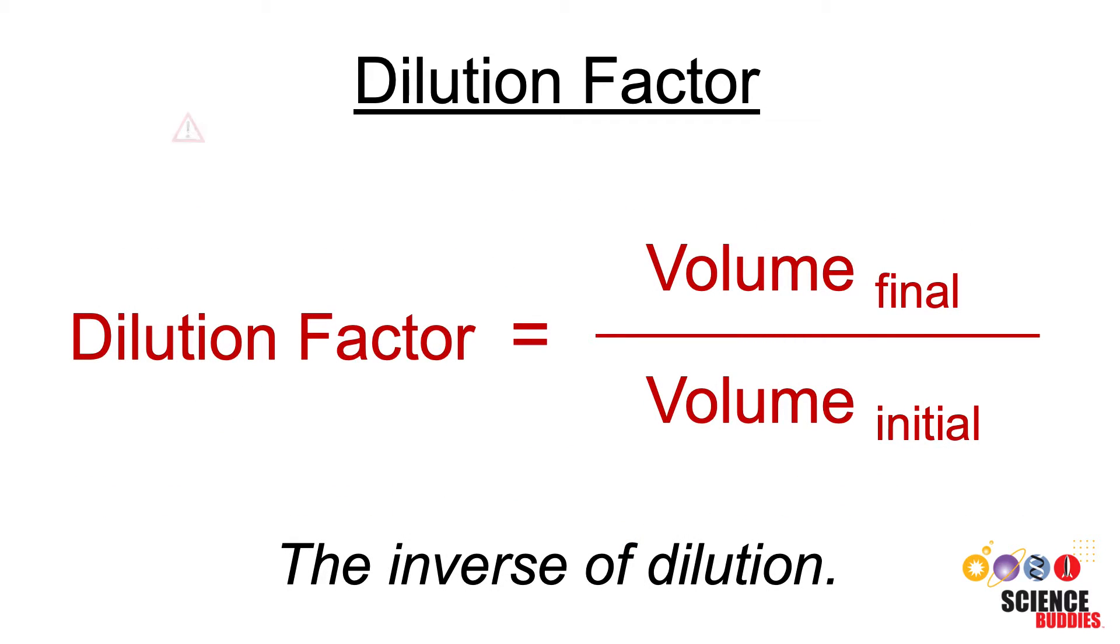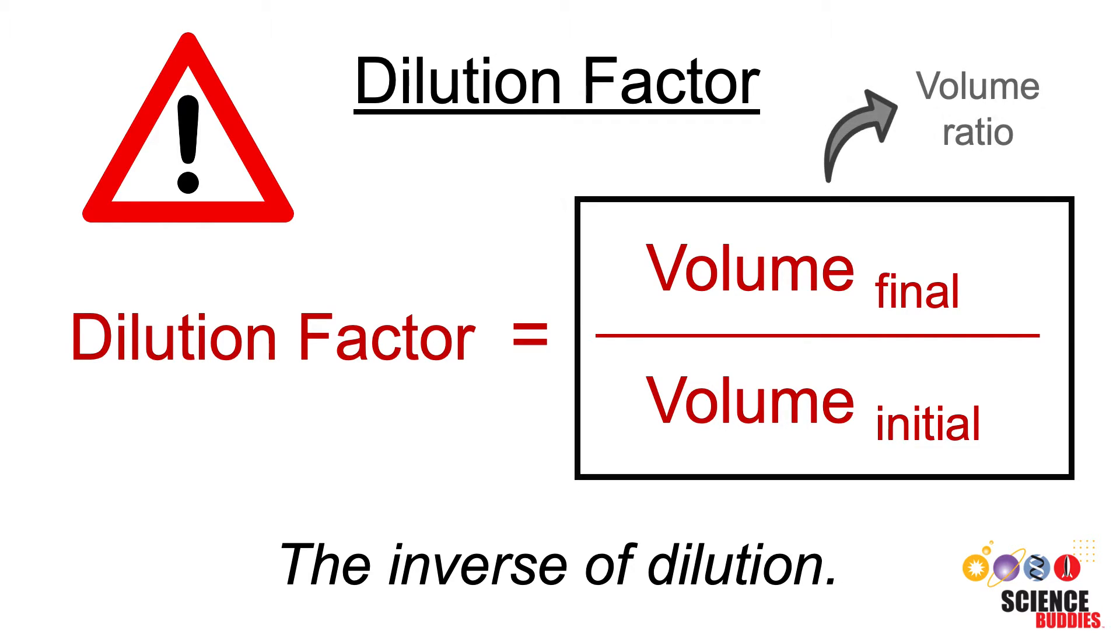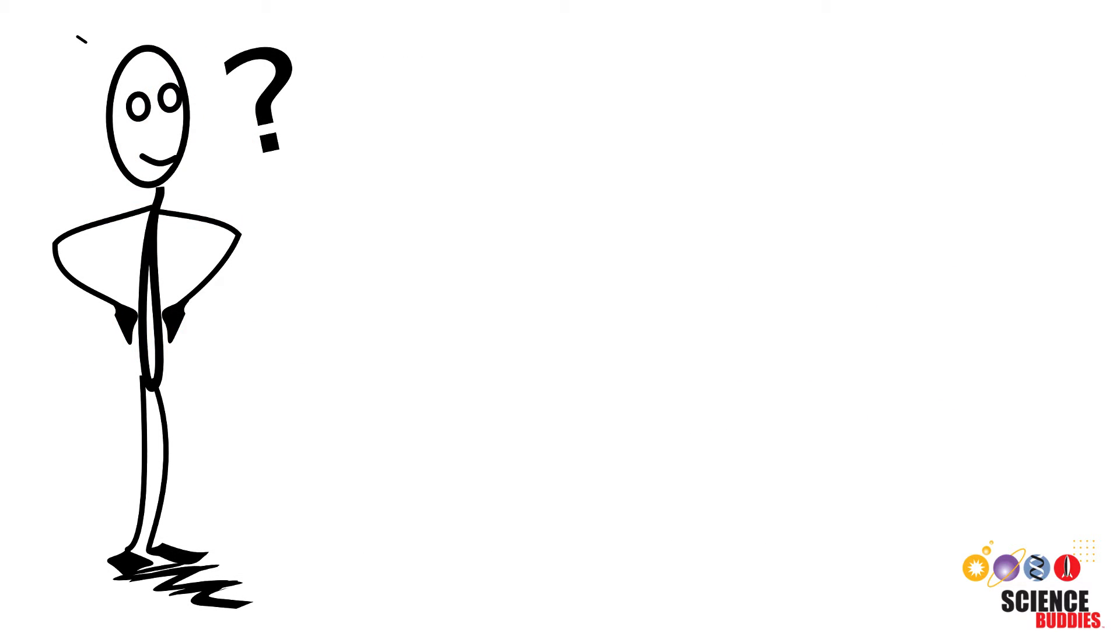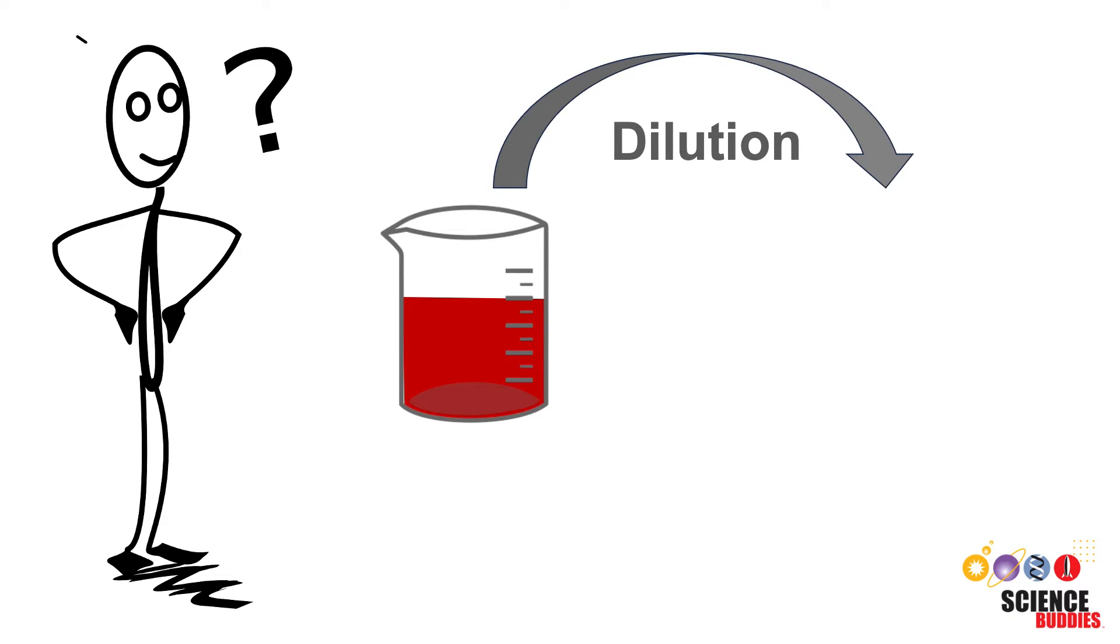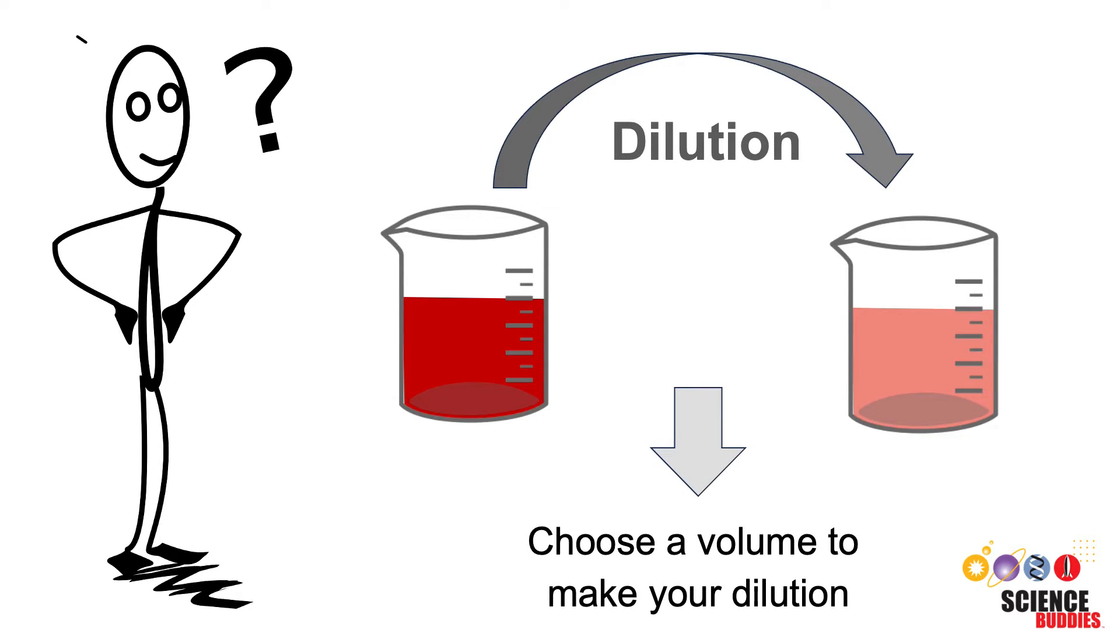Note that the dilution factor does not give you any numbers for the volumes to use for your dilution. It only tells you the ratio between the initial and final sample volume. So how do we go about making the actual dilution? If you need to make a dilution with a specific dilution factor, there are several ways to do that based on the volumes you choose.